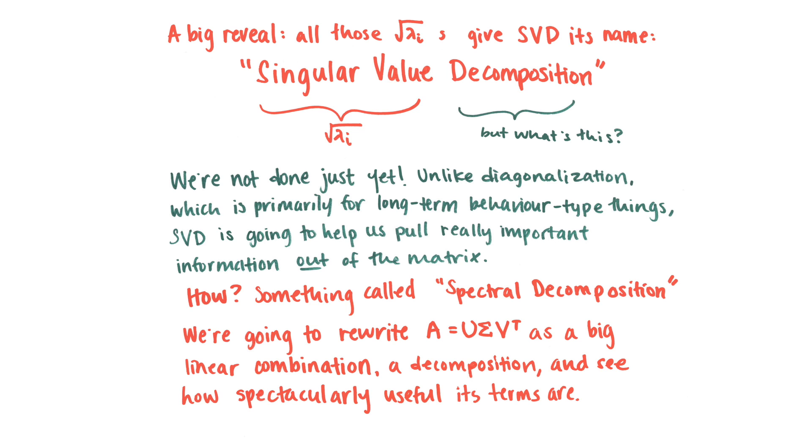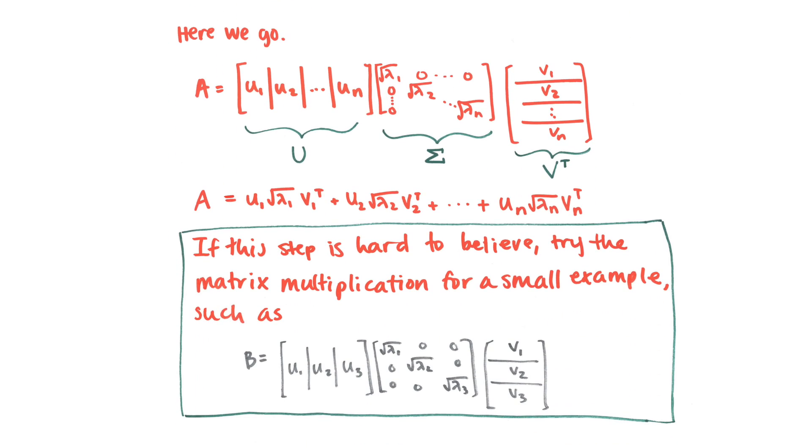We're going to rewrite A equals u sigma v transpose as a big linear combination, which is a decomposition, and see just how amazing and useful these terms are. So here we go. If you imagine that u is composed of a bunch of columns, u sub 1, u sub 2, etc., u sub n, which are the eigenvectors of A A transpose, and sigma, which has the singular values along the diagonal, and then v transpose has the eigenvectors of A transpose A as rows. Remember, it's transpose.